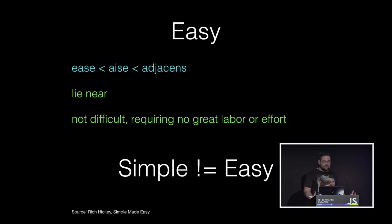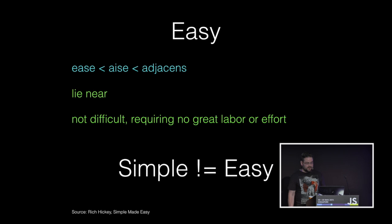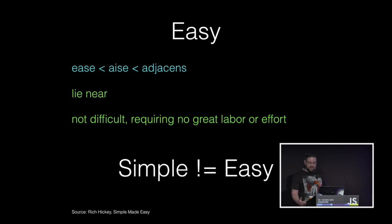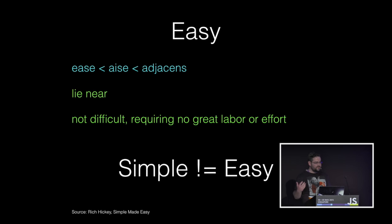Another word we frequently confuse with simple is 'easy,' derived from the Latin word 'adjacent,' meaning to lie near and be nearby. There are several meanings: the physical meaning of being near — is something right here, in my toolkit, installed on my computer? There's also whether something is near to our understanding or in our current skillset. As programmers, we're tremendously self-involved in these two meanings of easy. Simplicity is not the same as easy — it's not about your personal abilities, convenience, or tastes.